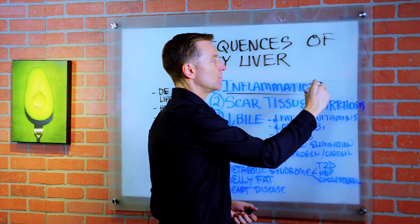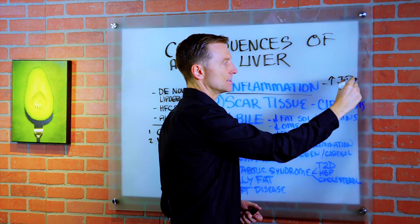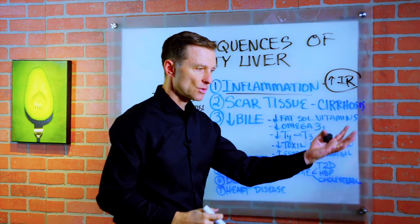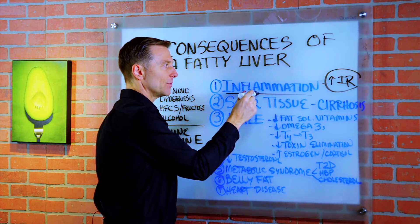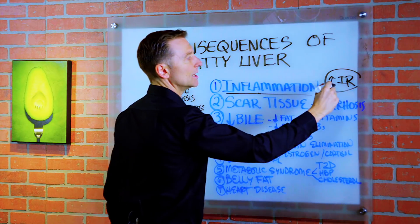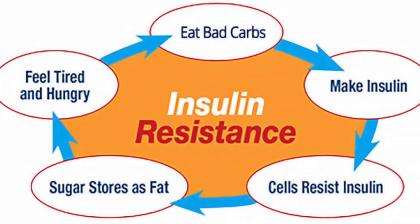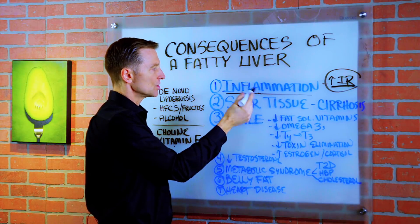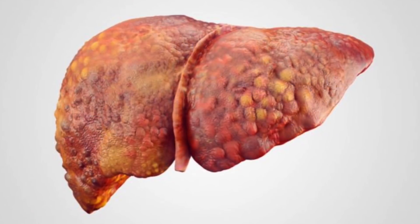The problem with that is it will increase a condition called insulin resistance, which is going to increase more insulin. So insulin creates this problem, but then this problem creates more insulin through insulin resistance. If the inflammation is there too long — chronic inflammation of the liver — you start developing scar tissue of the liver, called cirrhosis. This is where you start having some really big problems.